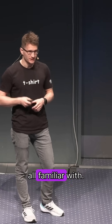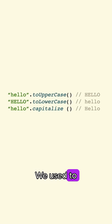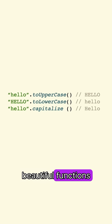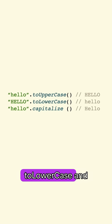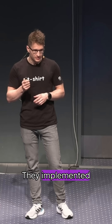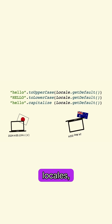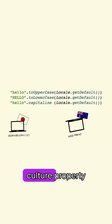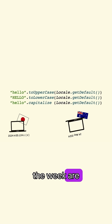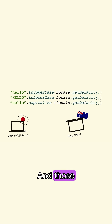Let's talk about something we're all familiar with: strings. We used to have those beautiful functions — to uppercase, to lowercase, and capitalize. Under the hood, they're implemented with something called locales, which is a cultural property of how days of the week are named, how days are formatted, and how some letters are uppercase and lowercase.